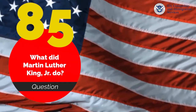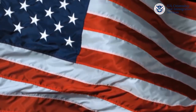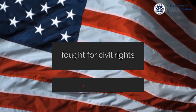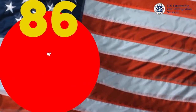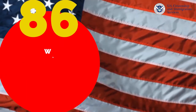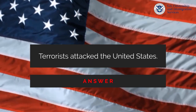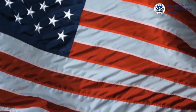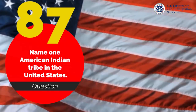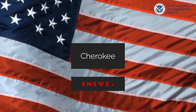What did Martin Luther King Jr. do? Fought for civil rights. What major event happened on September 11, 2001 in the United States? Terrorists attacked the United States. Name one American Indian tribe in the United States. Cherokee.